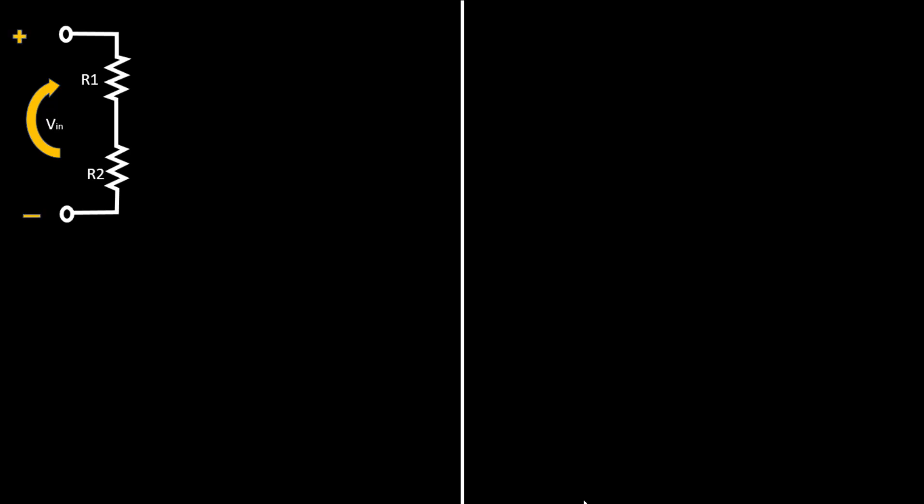It has its polarities. We want to see the output voltage across the lower resistor R2, and this output voltage is regarded as Vout. We can see that across R1 there is a current flowing, which is regarded as I1, and then across R2 there is a current flowing, which is I2.